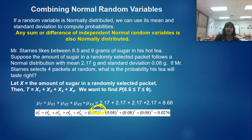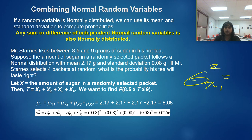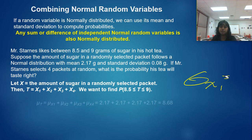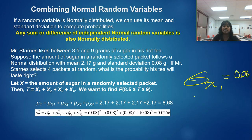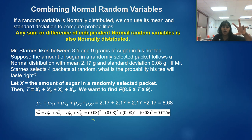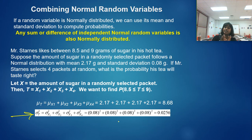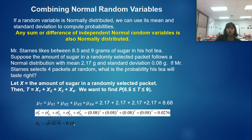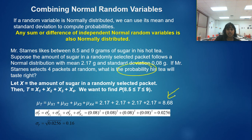To get variance back from standard deviation, we square: 0.08 squared. Adding all four variances together gives us the variance of T. To find the standard deviation of T, we square root it, giving a standard deviation of T equal to 0.16, since the square root of 0.0256 is 0.16. Now we have the mean of 8.68 and standard deviation of 0.16 for T.